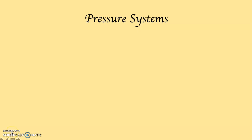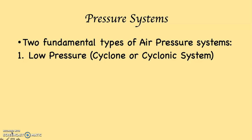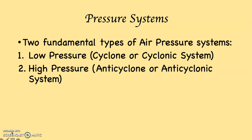Most of the time when we describe what's happening within the atmosphere vis-a-vis atmospheric pressure, we describe one of the two fundamental types of pressure systems. These are low pressure systems, which scientifically would be known as a cyclone or a cyclonic system, and high pressure, which scientifically is known as an anticyclone or an anticyclonic system.